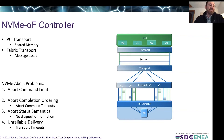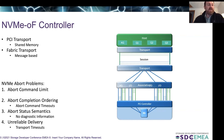In fabrics, the abort status semantics problem is exacerbated by the fact that we have no diagnostic information. When we get an abort status back, we don't really know anything about what happened. The host doesn't know if the controller has the command, or if it didn't, or if it just gave up — it's a best effort command and it doesn't really know anything.